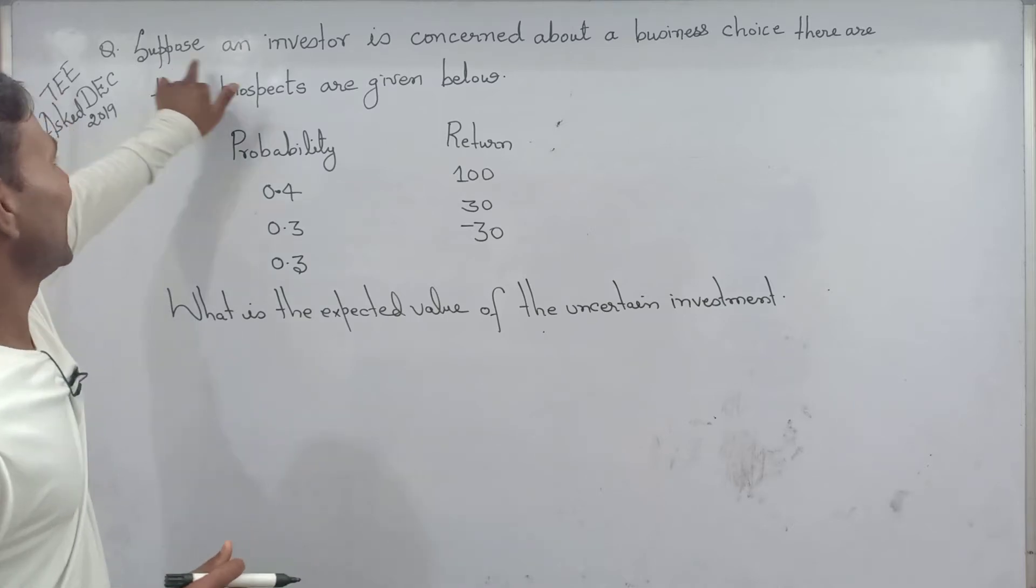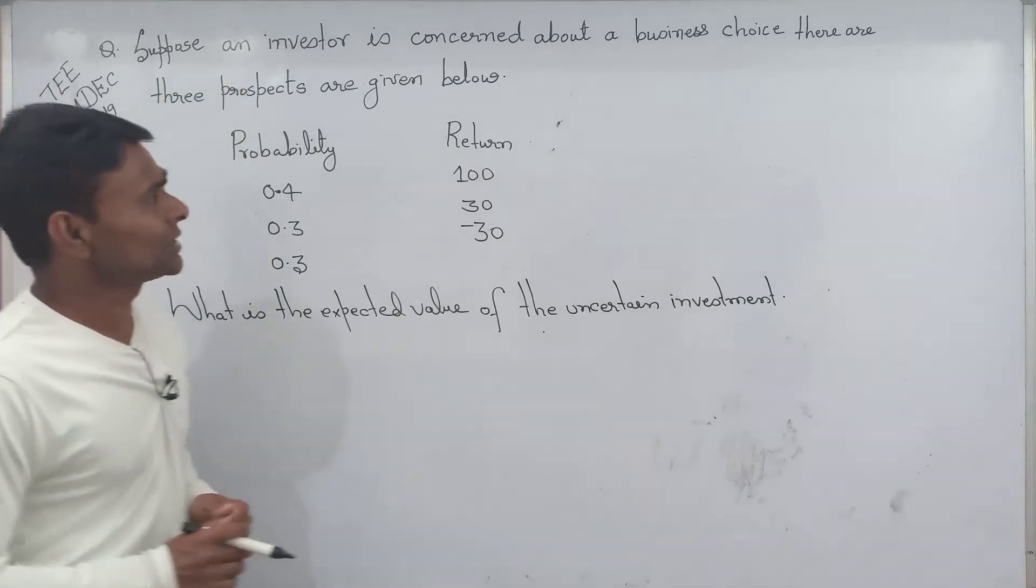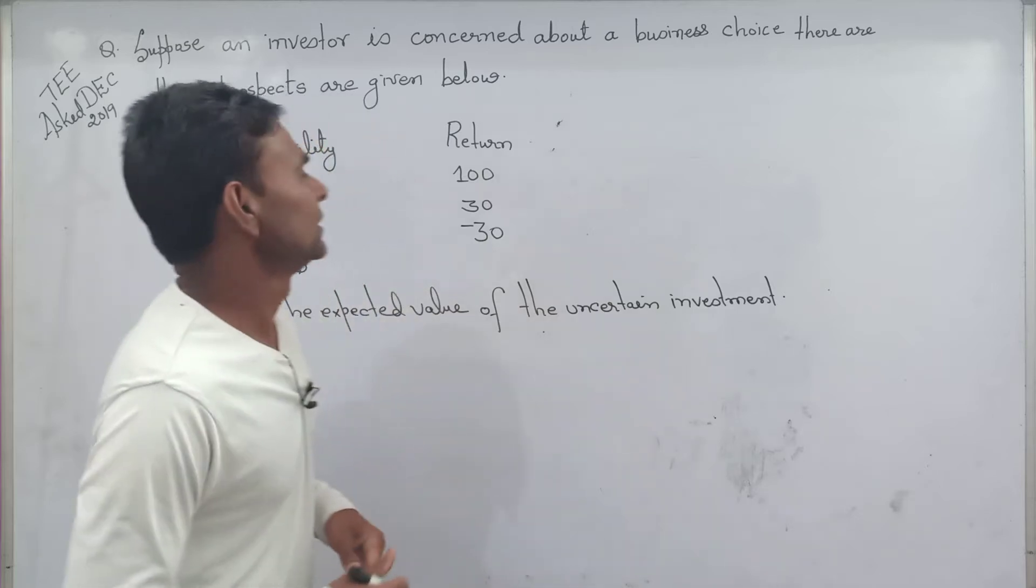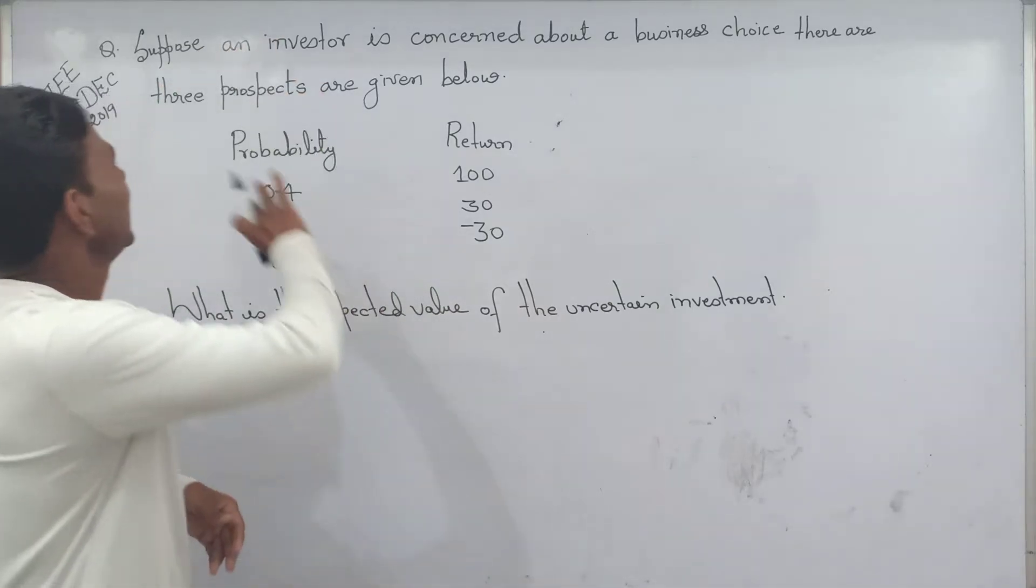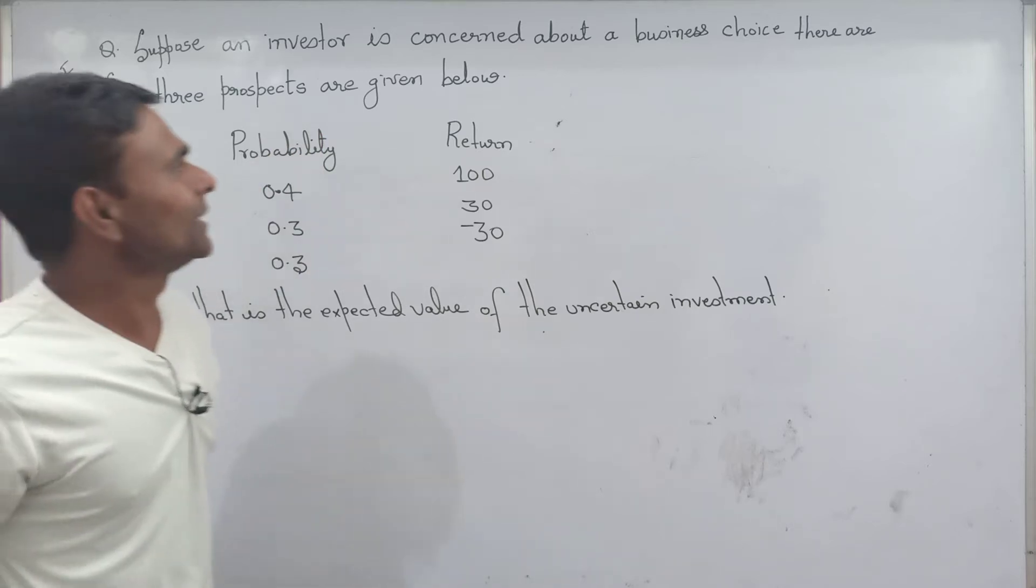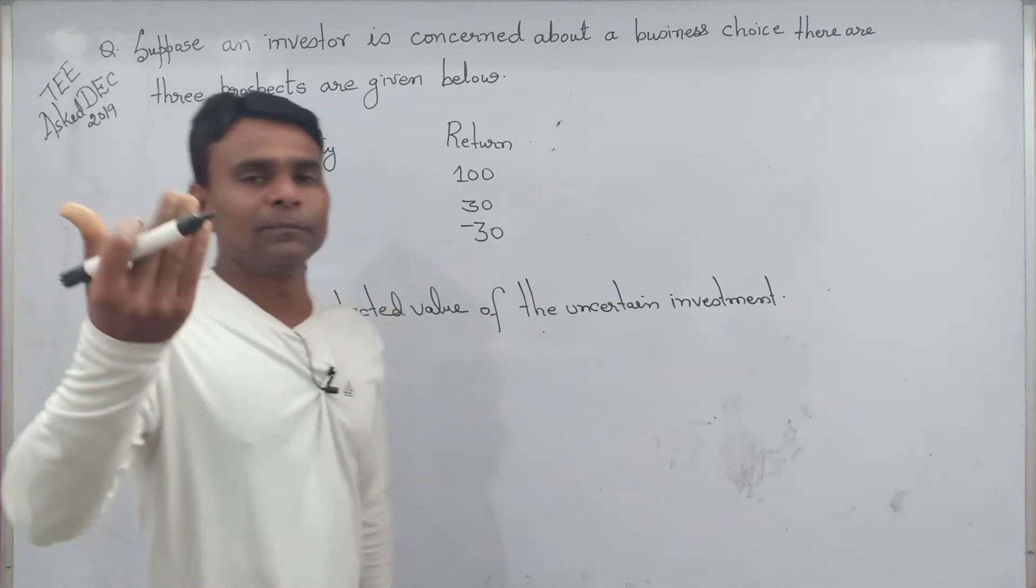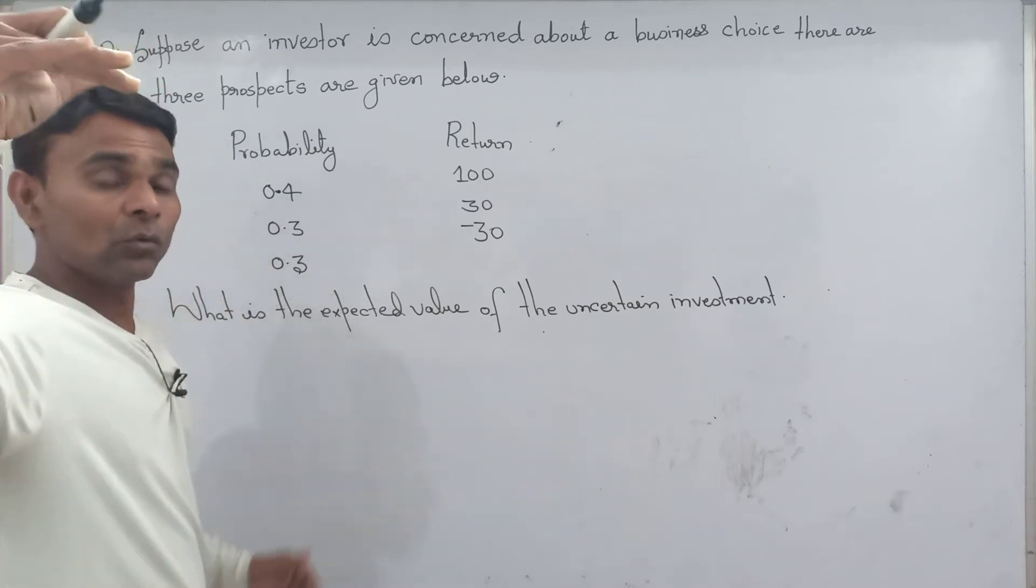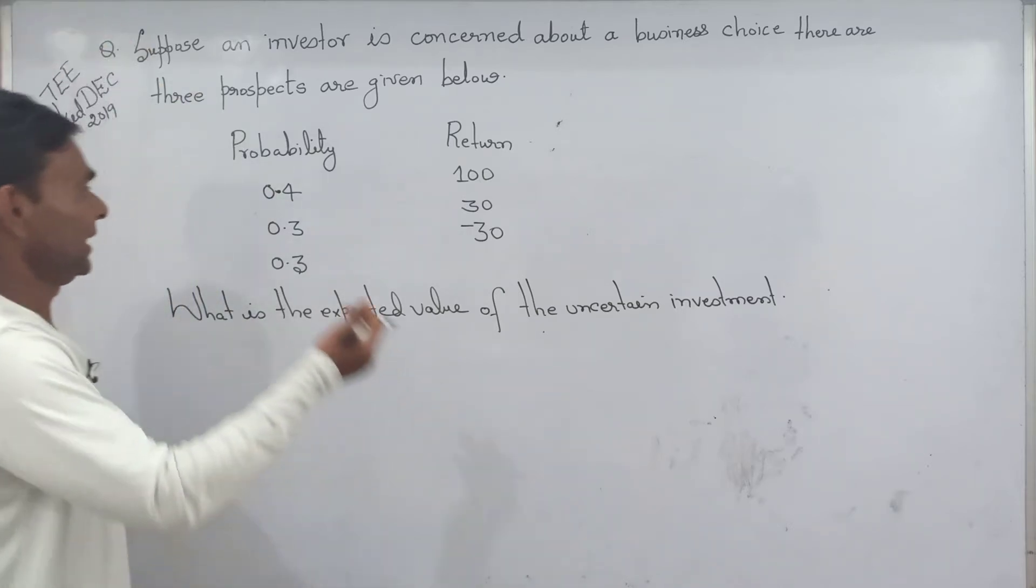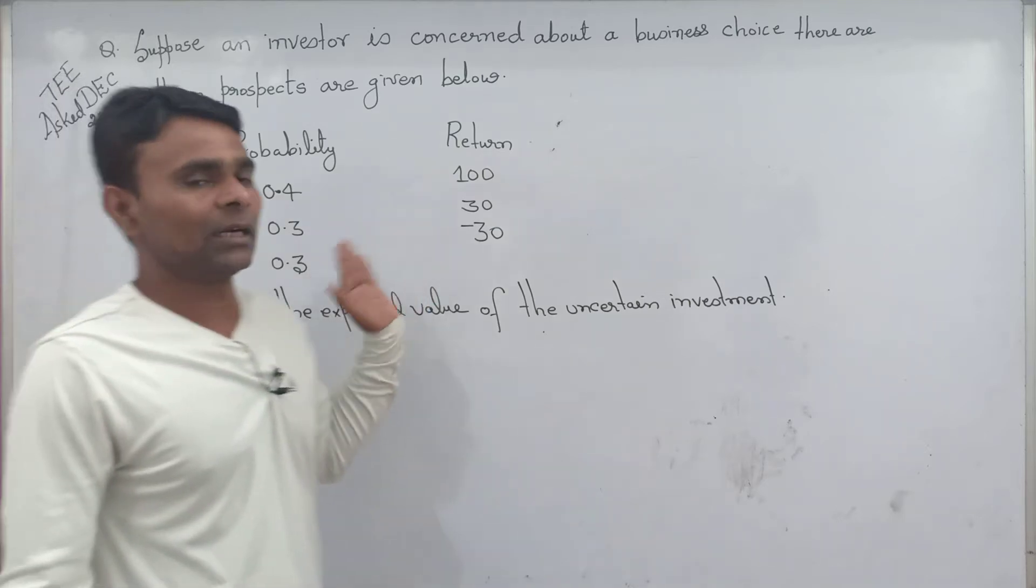The investor is concerned with a business choice. There are three prospects that are given below. One investor who wants to invest has a business choice. There are three prospects. They will be able to get the probability of return.